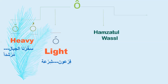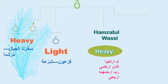If Ra has Sukun and is preceded by Hamzatwasl, it is heavy. Examples: 'Irtabu', 'Alladhir-tadha', 'Rabbir-ham huma', 'Irji'i' — all are heavy, not light.